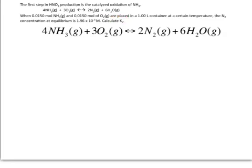In order to calculate the equilibrium constant, we need to know the concentrations of all the reactants and products at equilibrium. So let's go ahead and build our ICE table. I need the initial, the change, and the equilibrium concentrations.